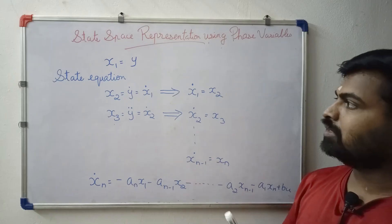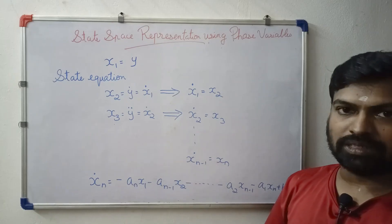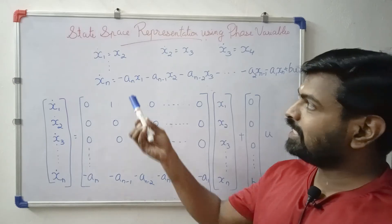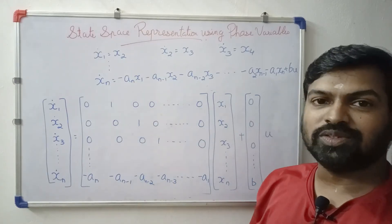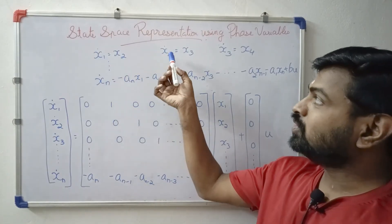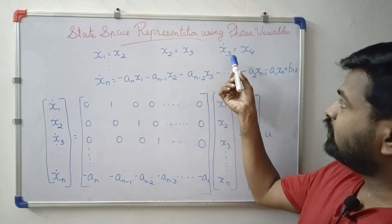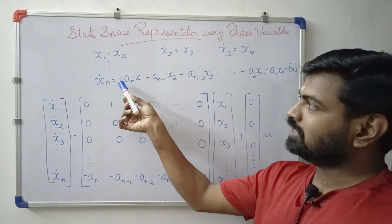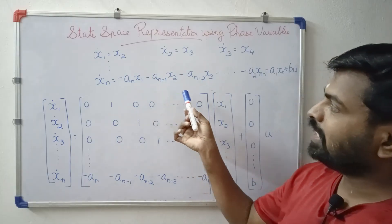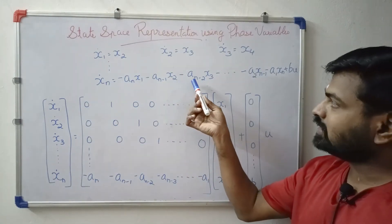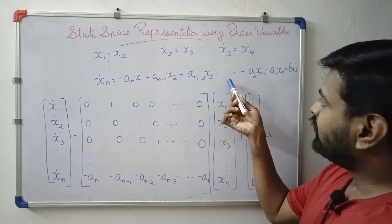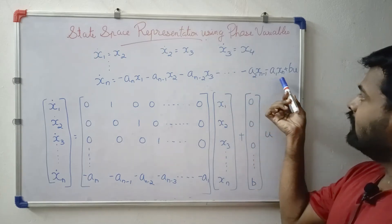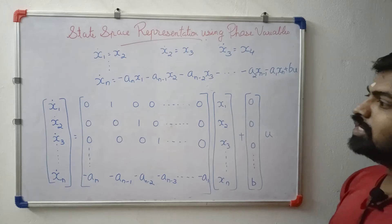We represent these in matrix form. So: x1-dot equals x2, x2-dot equals x3, x3-dot equals x4, and xn-dot equals minus a(n-1)*x2 minus a(n-2)*x3 minus a1*xn plus b*u. This is our equation.